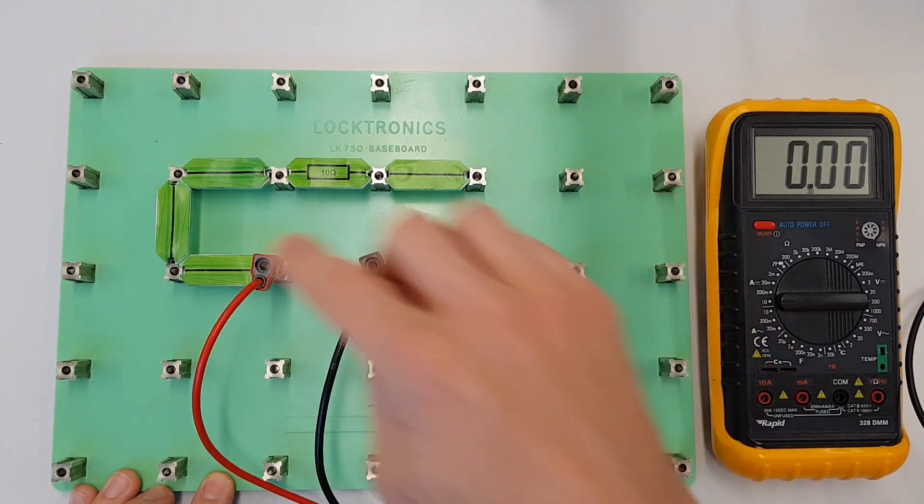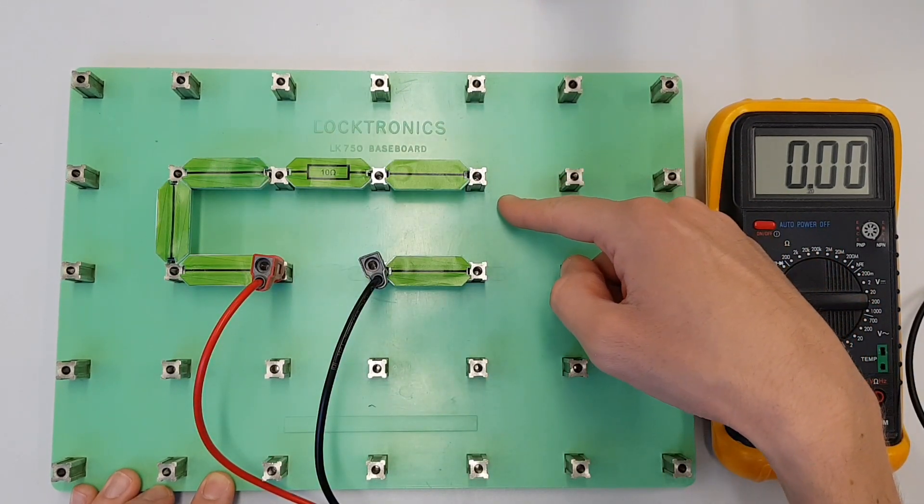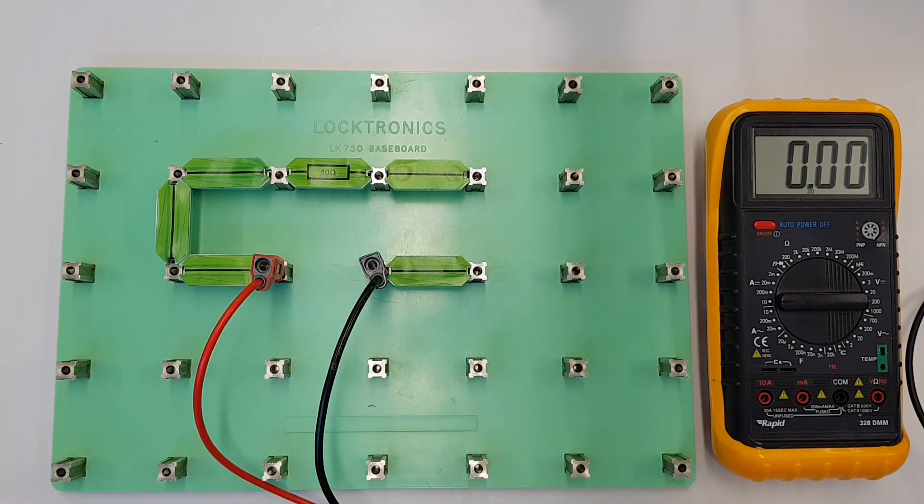Now it's of note that I'm measuring the current over here because actually in this circuit it wouldn't matter where I measure current. If I measured it over here or over here I'm going to get exactly the same value in both places. So let's have a look at this.